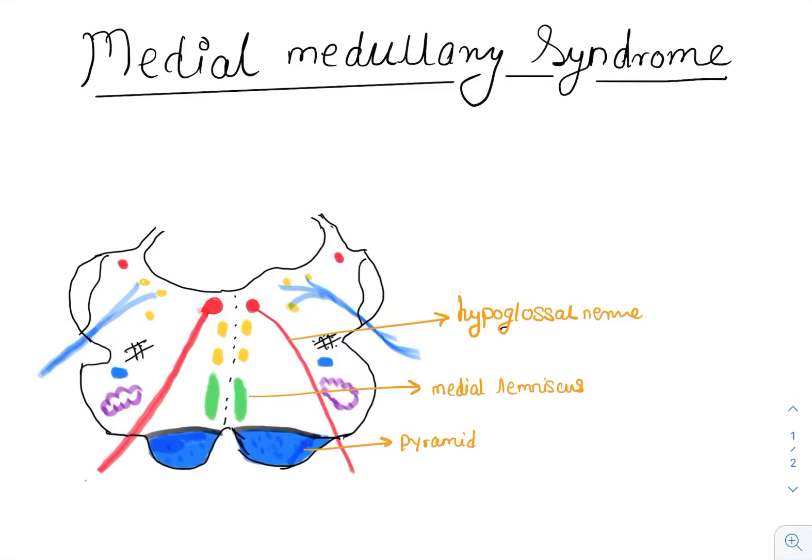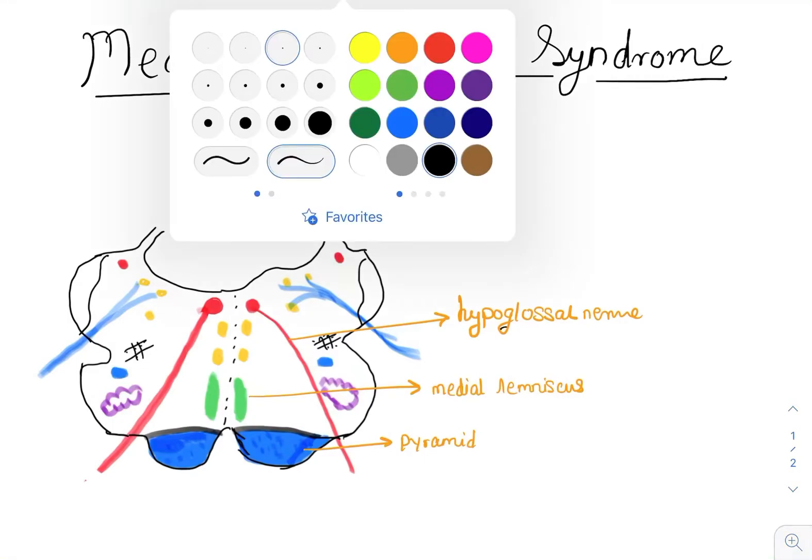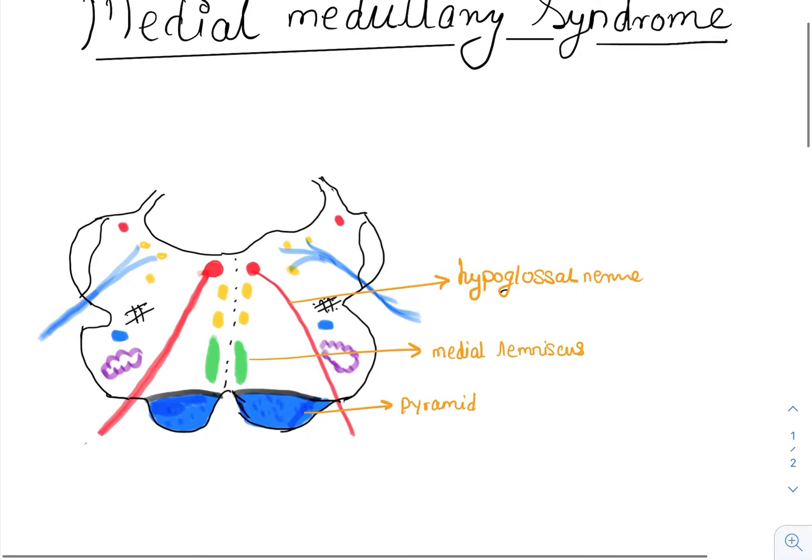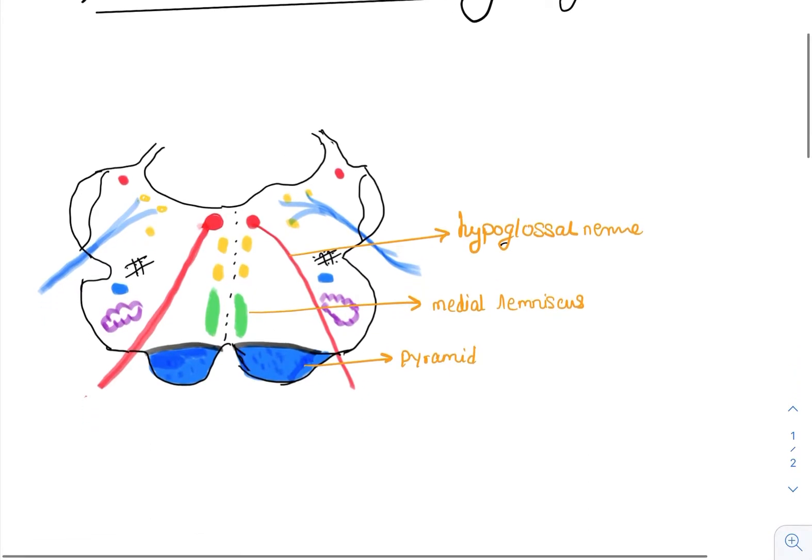Let's talk about medial medullary syndrome. Medial medullary syndrome is due to damage in the medulla, mainly from infarction of the medulla on its medial side, which involves the following structures: the hypoglossal nerve, the medial lemniscus, and the pyramids. All these structures lie in the medial part of the medulla.